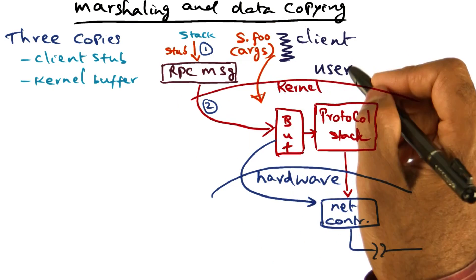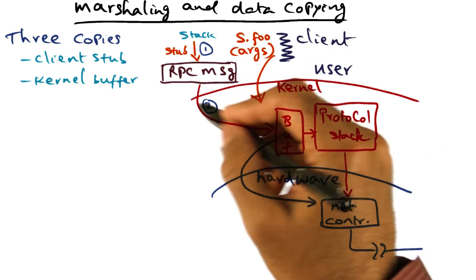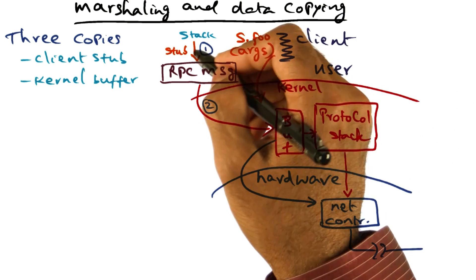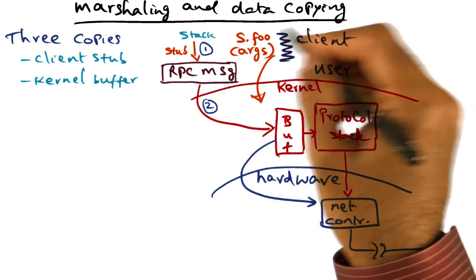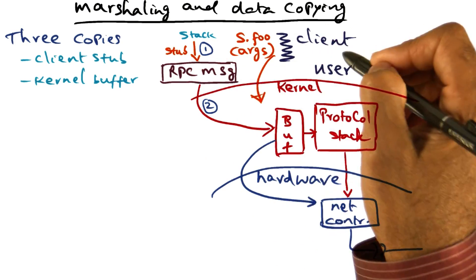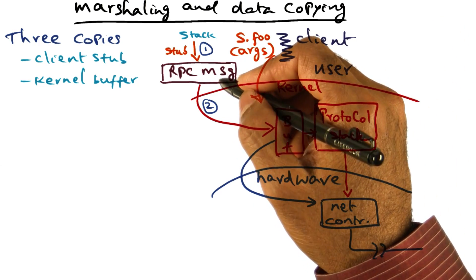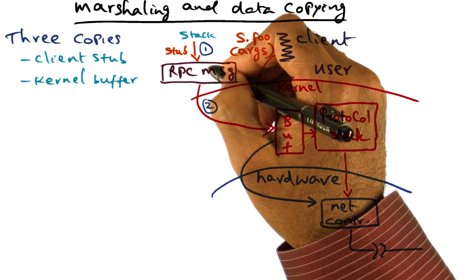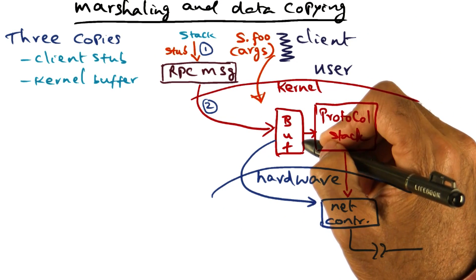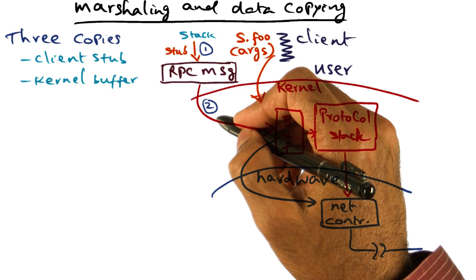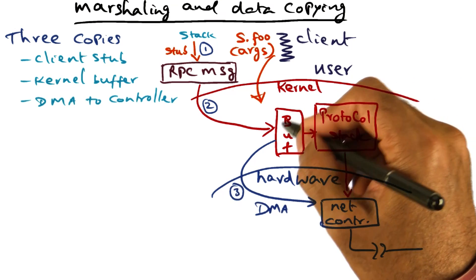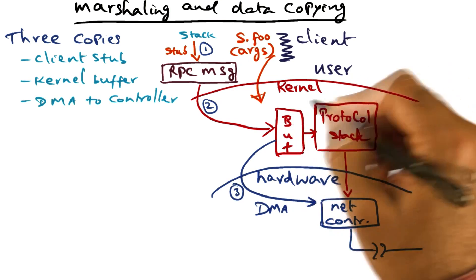The client is a user program, so it is living in user space outside the kernel. This RPC message, which has been created by the stub, is part of the client's address space living outside the kernel. So this RPC message is in user space, and the kernel has to make a copy of the RPC message from user space into its own buffer — the kernel buffer. That is the second source of overhead: the second copy in doing the marshalling of the arguments.